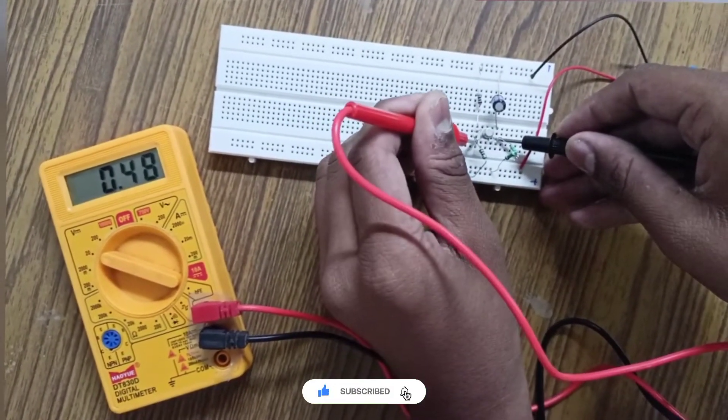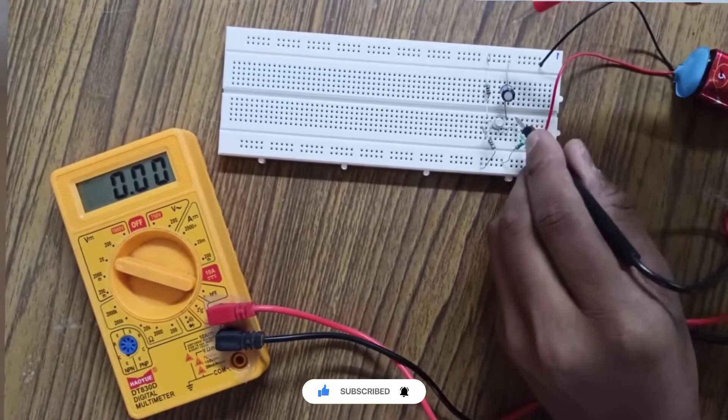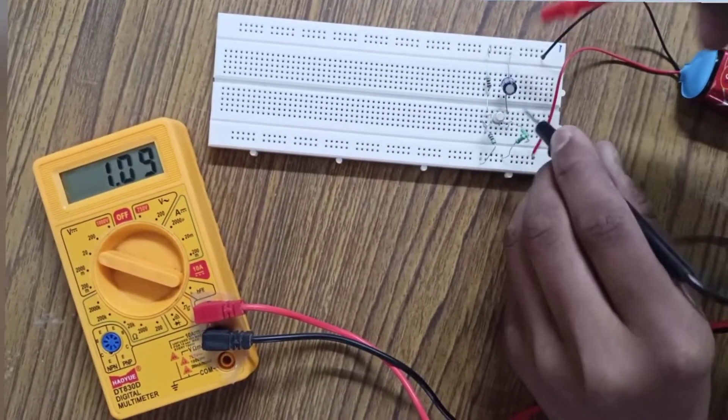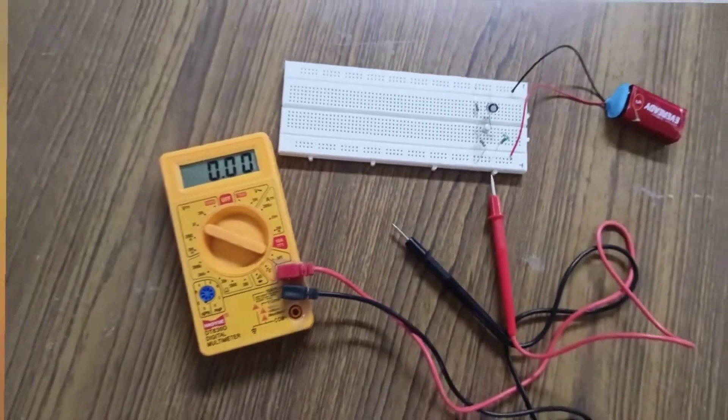The UJT voltage is 0.48 volts. Then we measure voltage across the 100 microfarad capacitor and it is 1.24 volts.